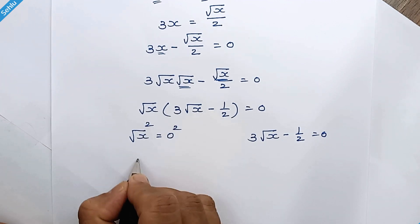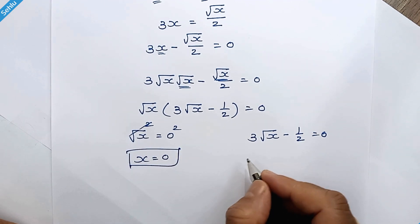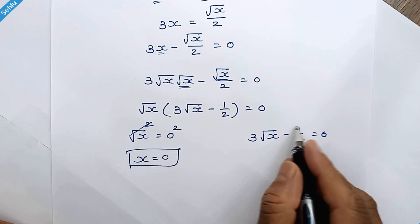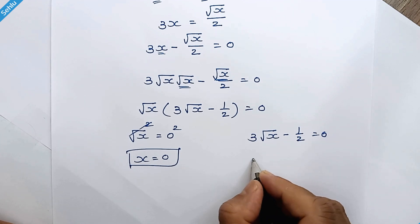Squaring both sides so here we have x is equal to 0. This is one solution and here we will move this here.